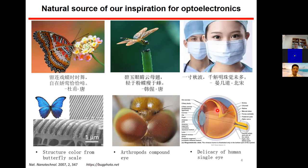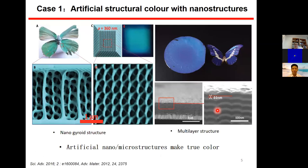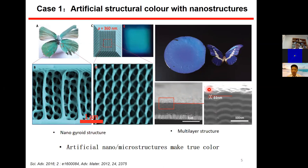What can we learn from a butterfly? As I mentioned, the butterfly has nanostructures that control light propagation to produce different colors. Researchers have already built nano gyro structures that replicate the butterfly wing structure, giving colors like blue or green. A multi-layer structure can also manipulate light to produce color — we learn this structural coloration from nature. Similarly, the feather of the peacock also shows micro and nano structures under SEM.